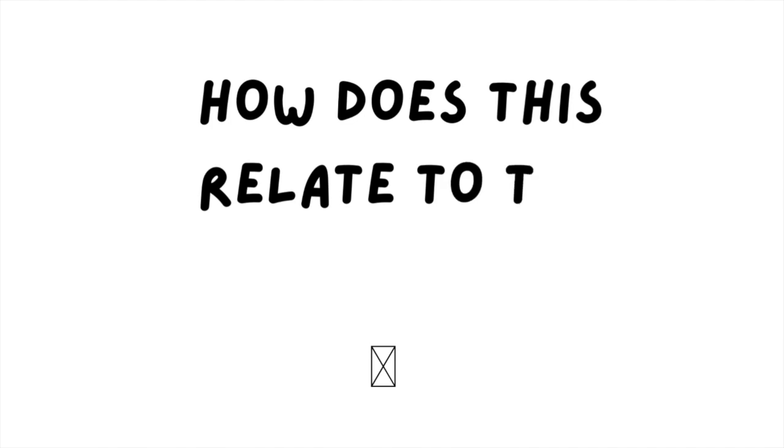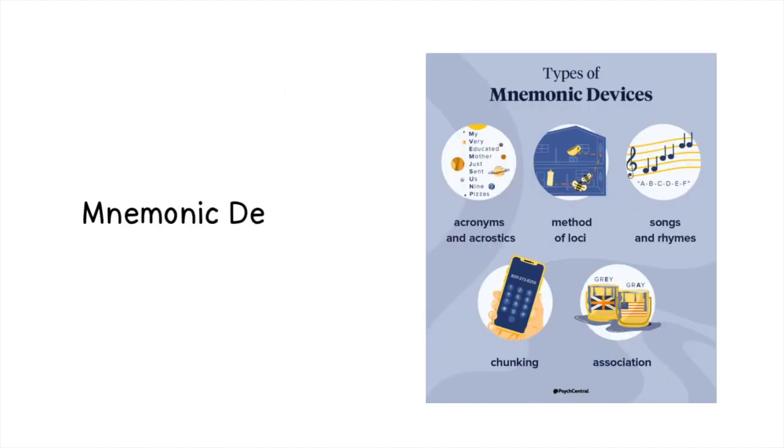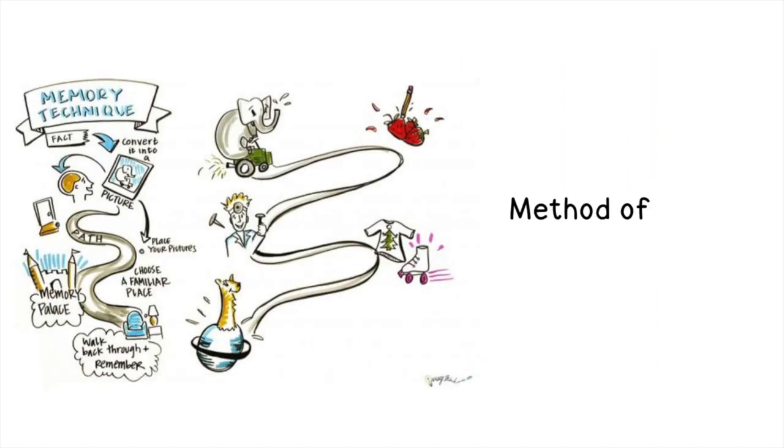So how does this relate to the method of loci? The method of loci works so well because it is a mnemonic device, a memorization strategy that involves a combination of images and content within a specific context. The method of loci primarily works by the combination of visuospatial information in order to enhance memory recall.